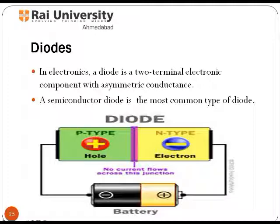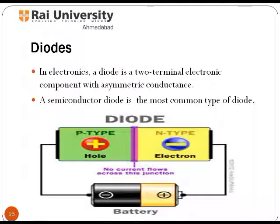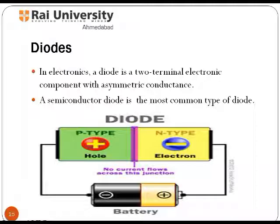A diode is a two-terminal electronic component with asymmetric conductance. It has low resistance to current in one direction and high resistance in the other. The most common type of diode is a PN junction diode. The most common function of a diode is to allow an electric current to pass in one direction while blocking the current in the opposite direction.